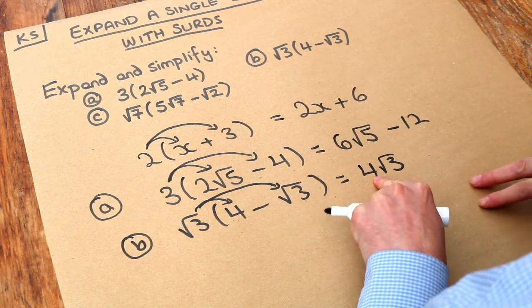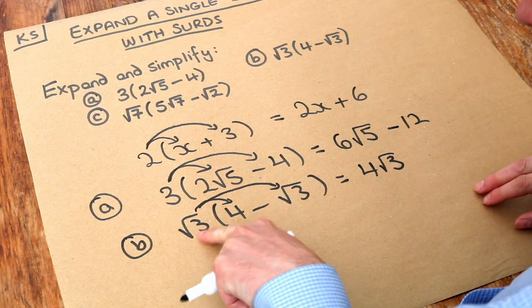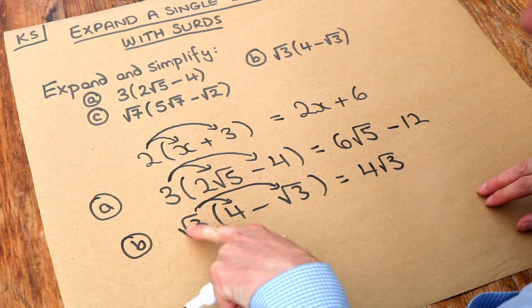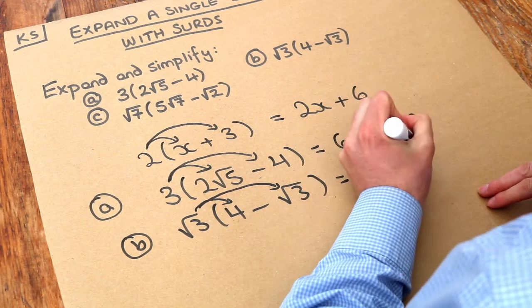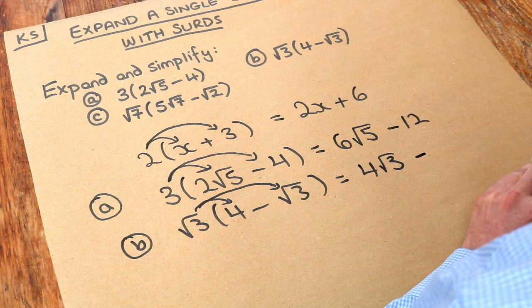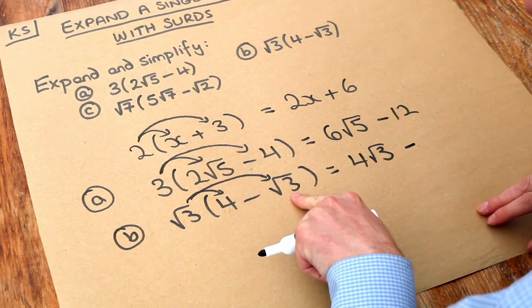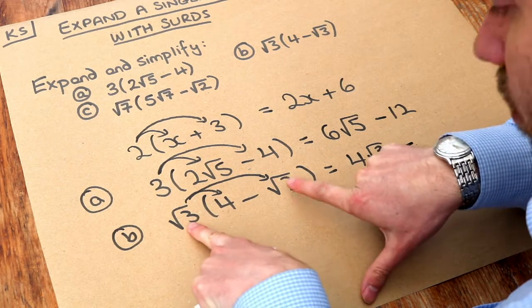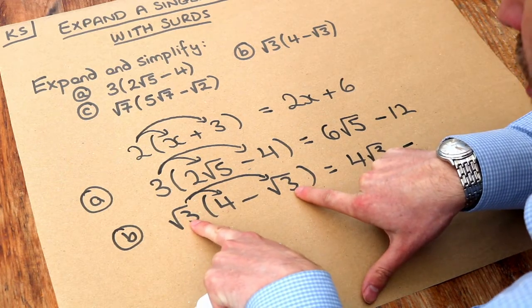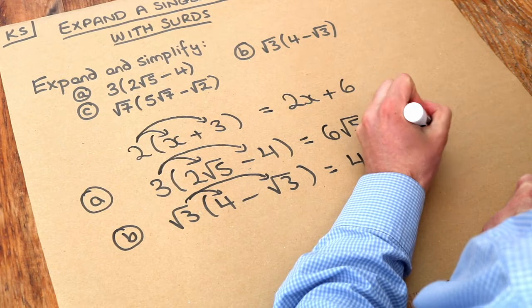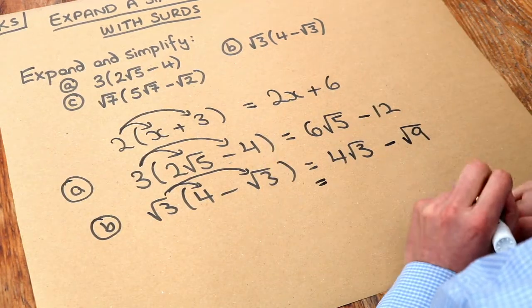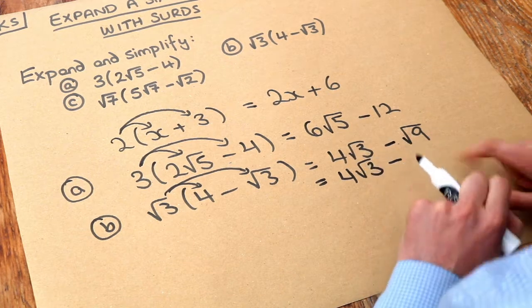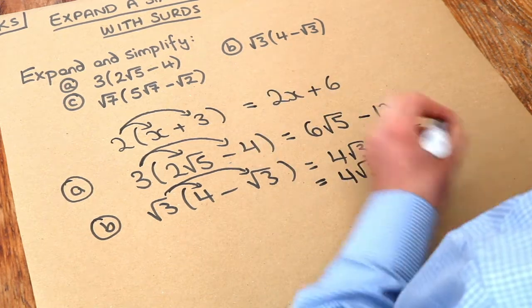We always put the non-surd first. And then we do the root 3 times the minus root 3. I tend to put the sign in first. What's positive times negative? Well it's negative so I'll put the minus in so I don't have to worry about that anymore. And then what's root 3 times root 3? Well we're multiplying two surds together so we just multiply those numbers together. 3 times 3 is 9 so it's root 9. And then we can subsequently simplify that so we get 4 root 3 minus, well what's the square root of 9? 9 is a square number. The square root of 9 is 3.